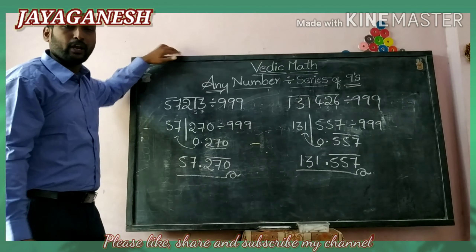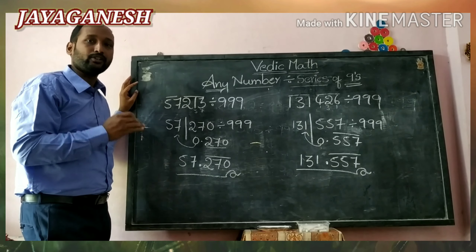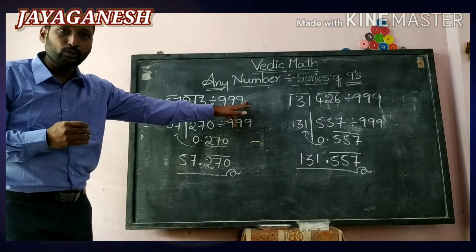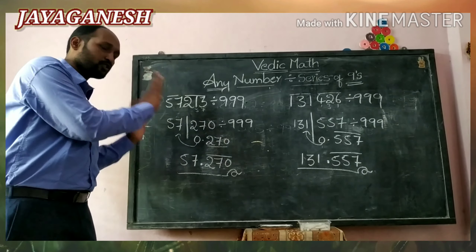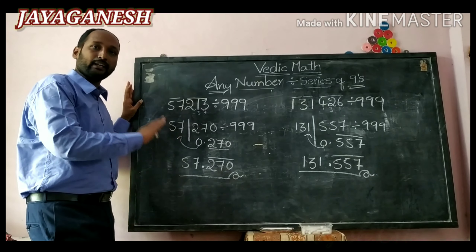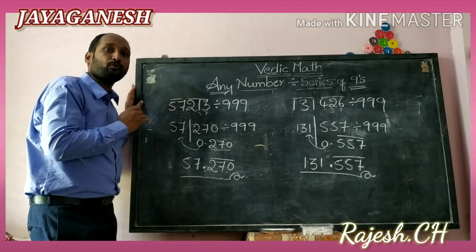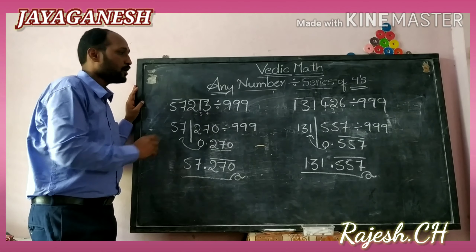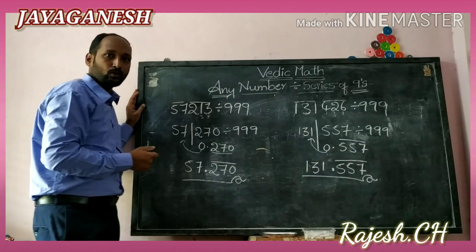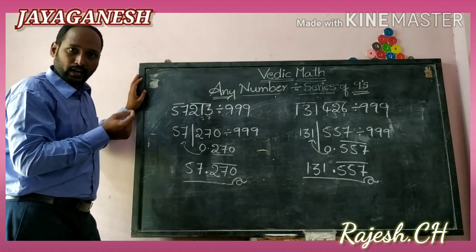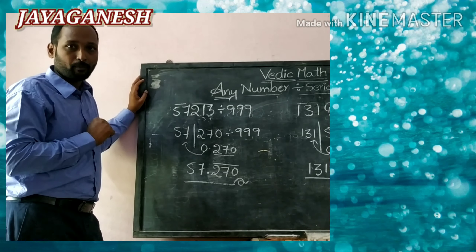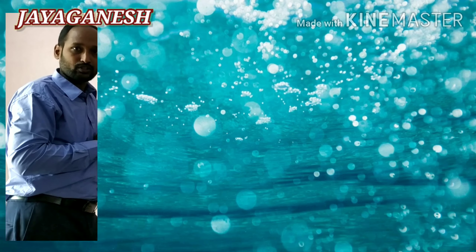Now I have explained to you division by 9, division by 99, division by triple 9. If anyone asks — if I keep one more 9, what will you do? You will take 4 digits, that's all, but the process is the same. What you have learned by this is: 9, 99, triple 9 — these are where the number of digits is more and the number of 9s is less. The next topic we will go with equal numbers divided by equal 9s, and less numbers divided by more 9s — those two topics are left, which I will teach you in the next videos. Thank you, children.